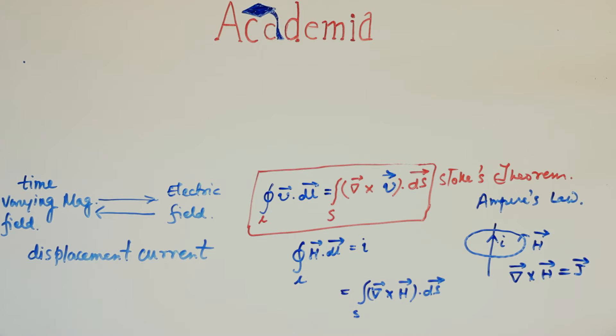Now how did his theory of converse of Faraday's law gave birth to the concept of displacement current? What is this displacement current actually?